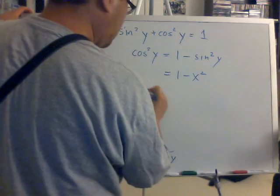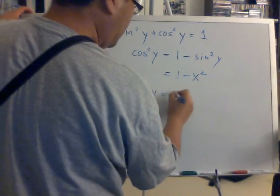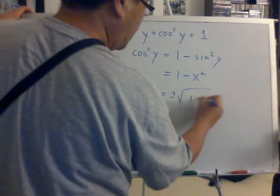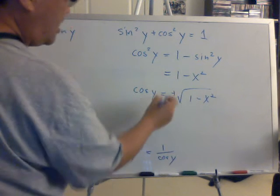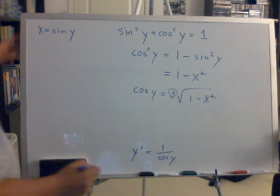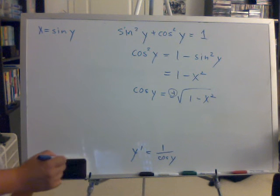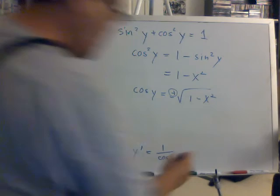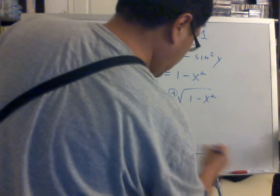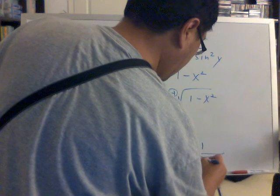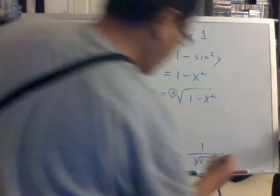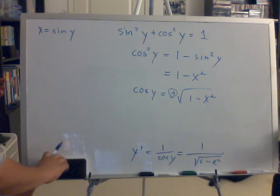Therefore, you have cosine of y equals plus or minus square root of 1 minus x squared. But you're only interested in the plus sign, not the negative sign. And you will have y prime equals 1 over square root of 1 minus x squared. So that's one way of solving it.